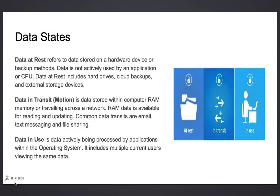There are three different data states for encrypted information: data at rest, data in transit or motion, and data in use. Data at rest is information stored on a hardware device or in a file backup — the data is not being actively used by an application or CPU. Data at rest includes hard drives, cloud backups, and external storage devices.